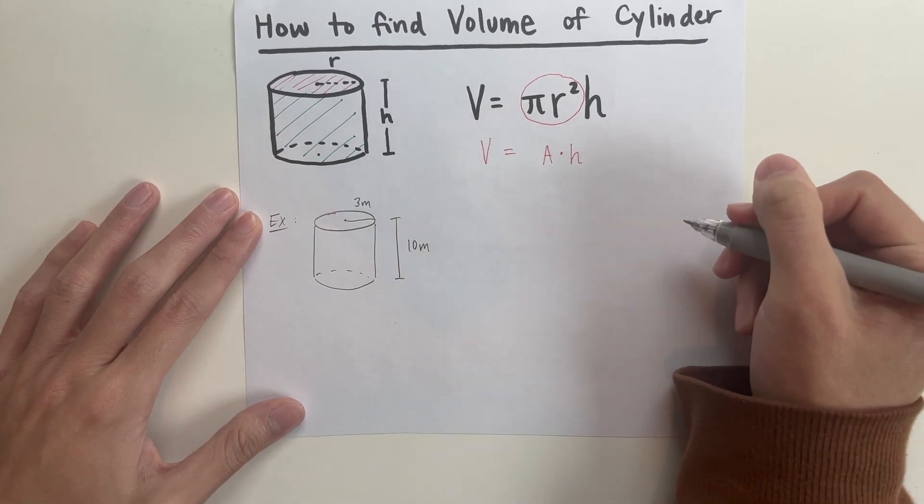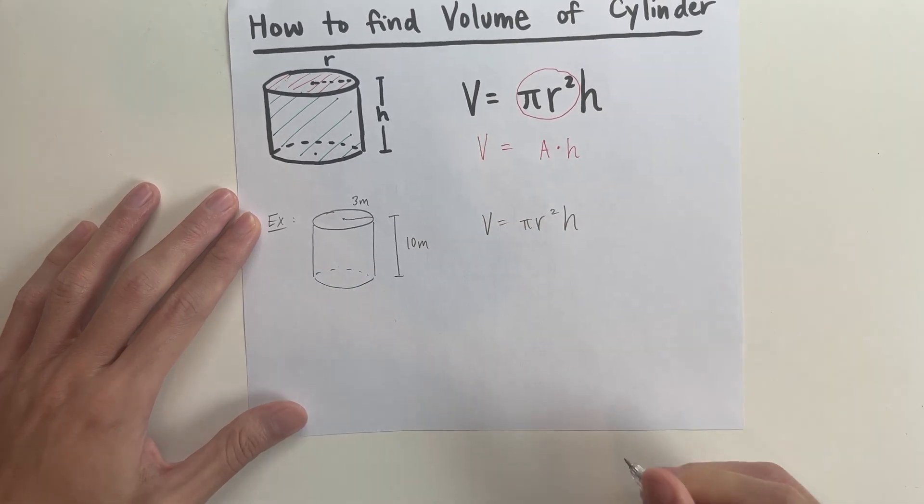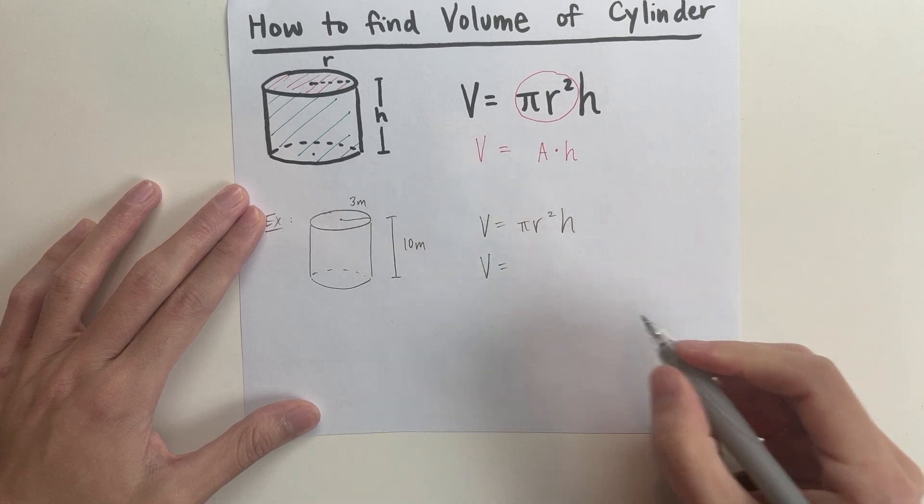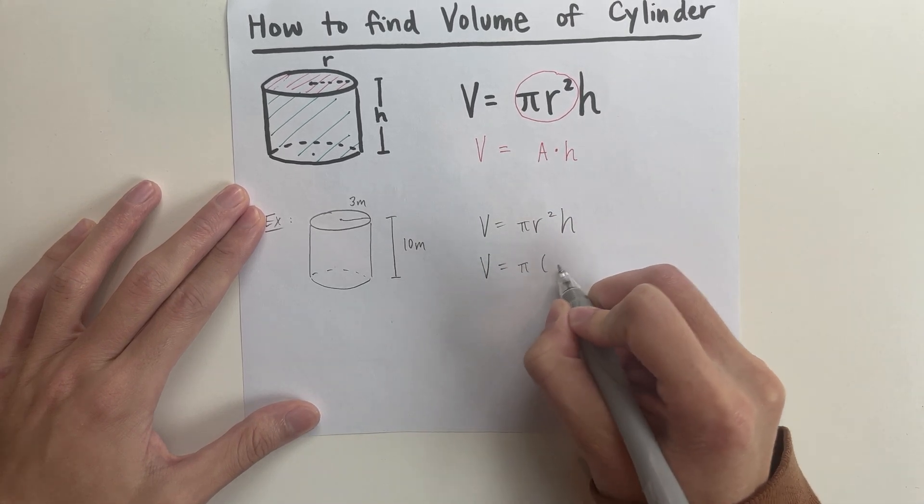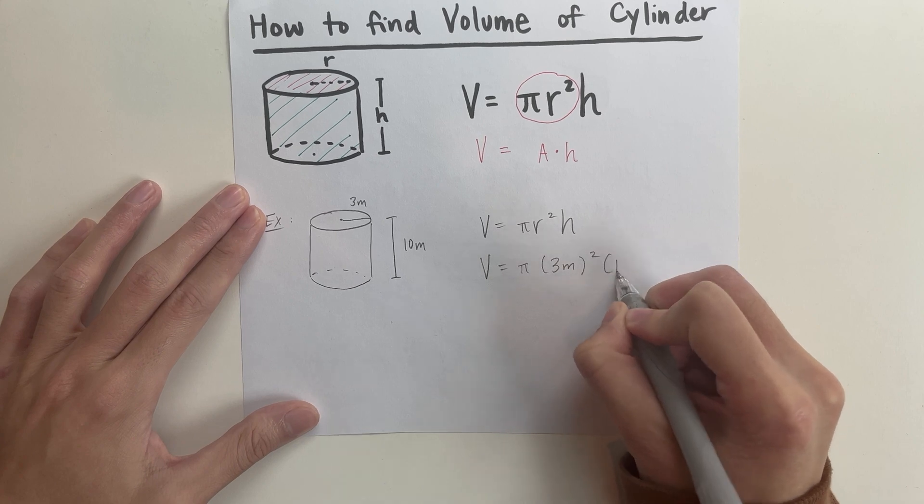When you try to find the volume, volume is pi r squared times h. Let's plug all these values in. It's going to be volume equals pi times radius, which is 3 meters squared, times the height, which is 10 meters.